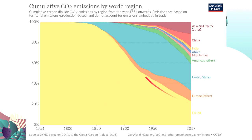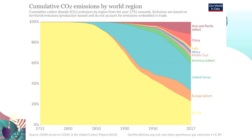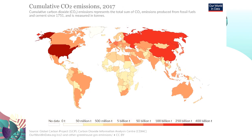There has been a decrease in carbon dioxide emissions for the European Union, while the United States is still quite high. Around 100% of global emissions still comes from Asia and the Pacific. China is the second largest emitter of carbon dioxide, followed by India, Africa, the Middle East, and the Americas.